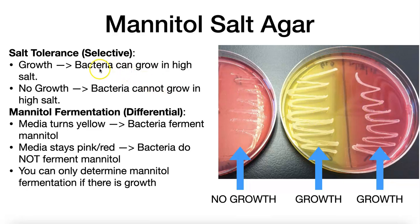There is a high amount of salt in this media. If there's growth, you can conclude the bacteria can grow in a high salt environment. If there's no growth, the bacteria cannot grow in that high salt environment. This is known as a salt tolerance test because you're asking: can a given bacteria tolerate a high salt concentration or not? This type of media where we're looking for growth or no growth is called selective media.